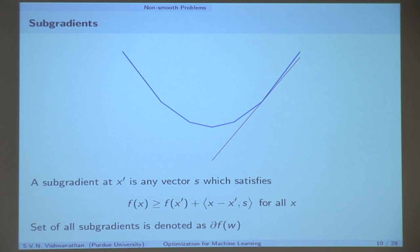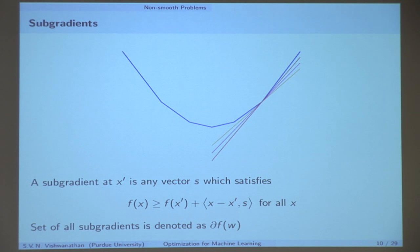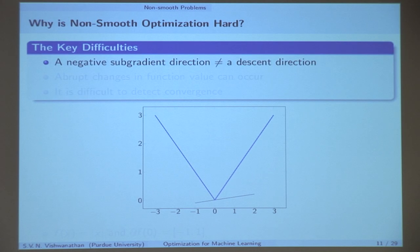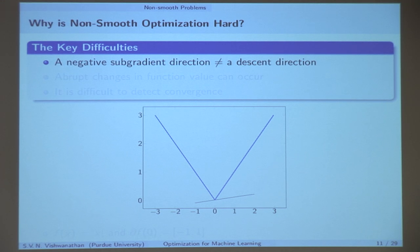Let me remind you again of subgradients — this is a recurring theme, and these are really important concepts. Subgradients are vectors which can be used to build a piecewise linear lower bound to the objective function. We denote the set of all subgradients as the subdifferential of F at W. I want to make very explicit why dealing with smooth convex functions is nice, while non-smooth optimization problems are so much harder.